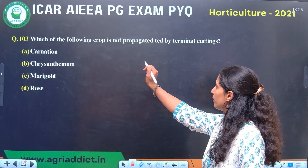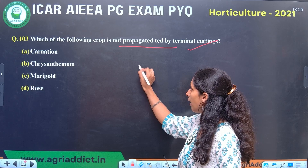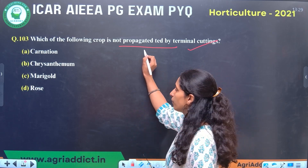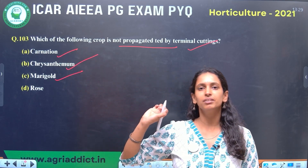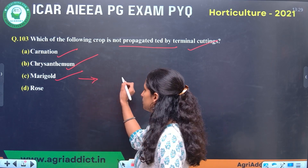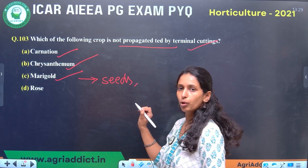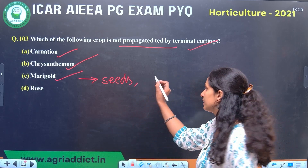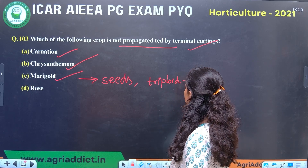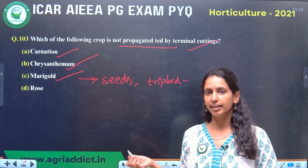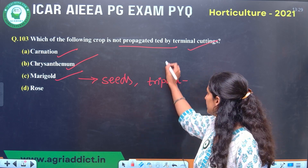First question: which of the following crops is not propagated through terminal cuttings? Terminal cutting is the terminal part of the plant, especially used in herbaceous plants. Carnation, Chrysanthemum, and Marigold are all propagated by terminal cuttings. In Marigold, propagation is mainly done by seeds, but triploid varieties do not produce seeds, so they go for terminal cuttings. Varieties like Arka Bangara-1 and Arka Bangara-2 are propagated by terminal cuttings.